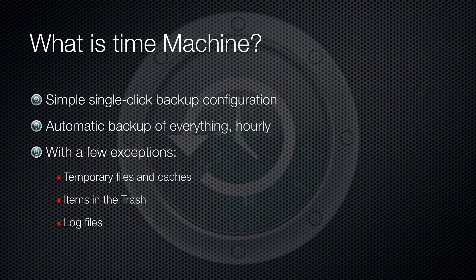What makes Time Machine different from other backup applications is that it not only keeps a spare copy of every file, it remembers how your system looked on any given day. Time Machine keeps hourly backups for the past 24 hours, daily backups for the past month, and weekly backups until your backup drive is full.